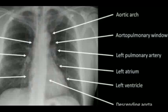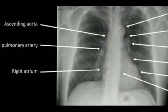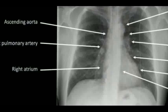Below the aortic arch we have the aortopulmonary window, below which we have a large opacity known as the left pulmonary artery. Then we have the left atrium near the mitral area, present in the fifth intercostal space, then the left ventricle at the base of the heart. Then we have the descending aorta on the medial side of the left lung. On the right side we have the ascending aorta, the pulmonary artery, and the right atrium — the only chamber present on the right side.